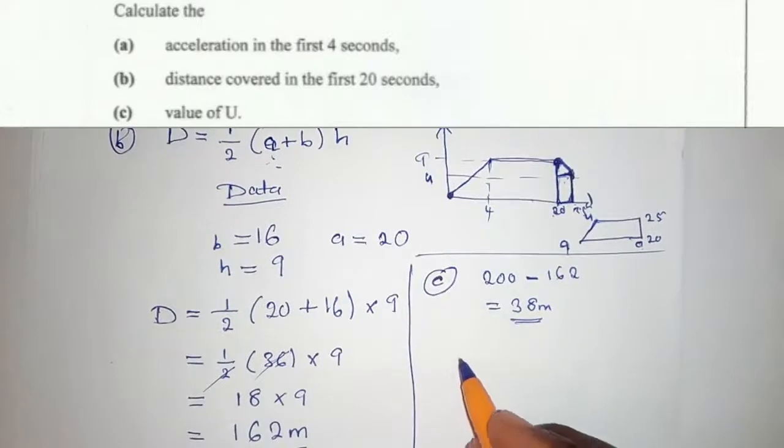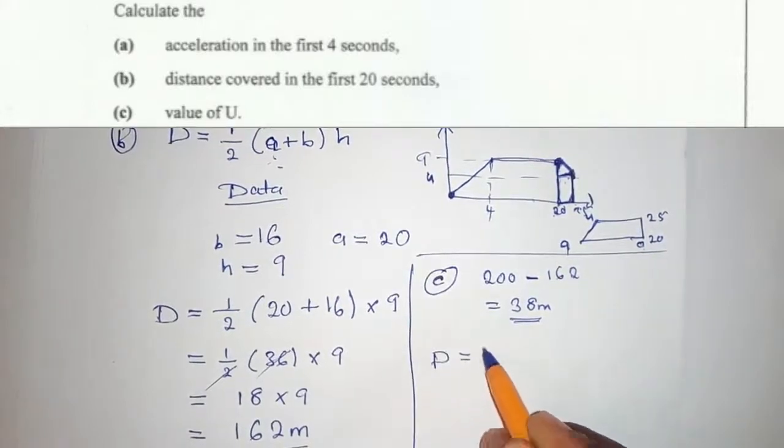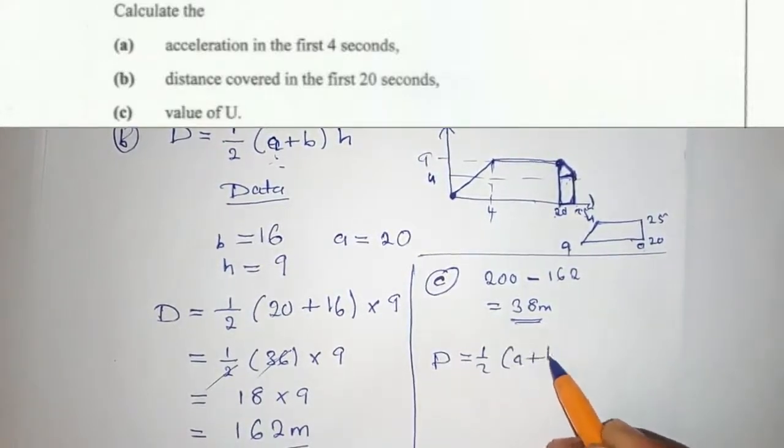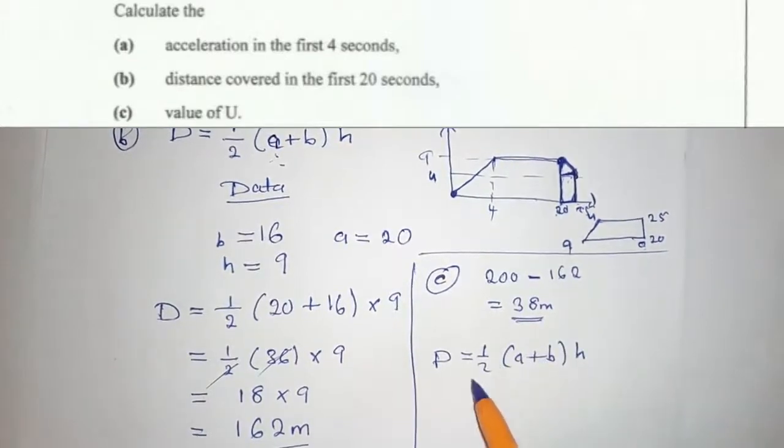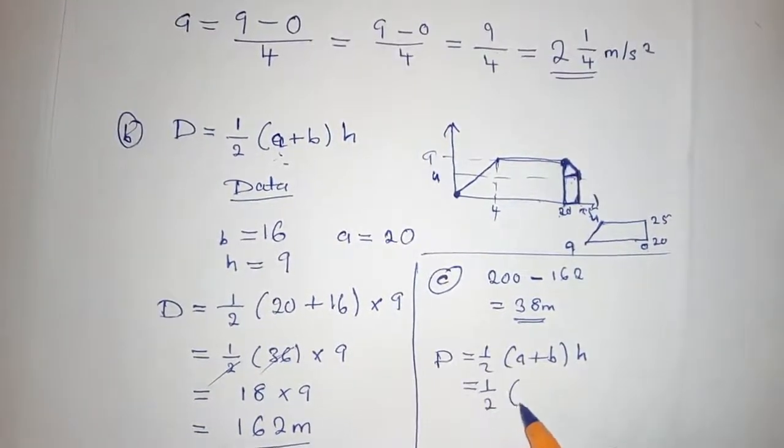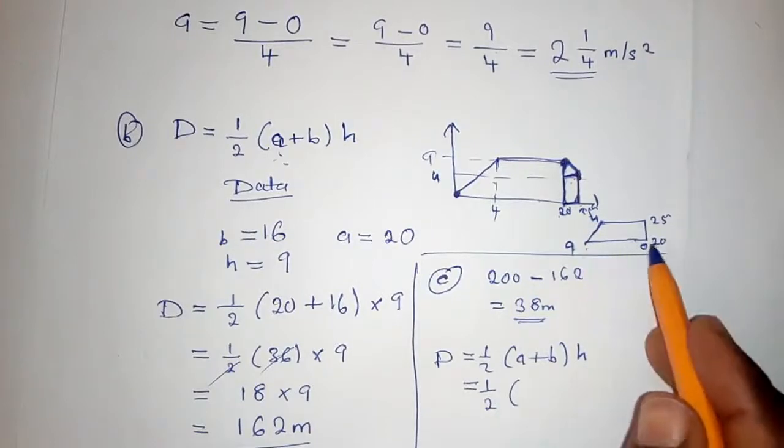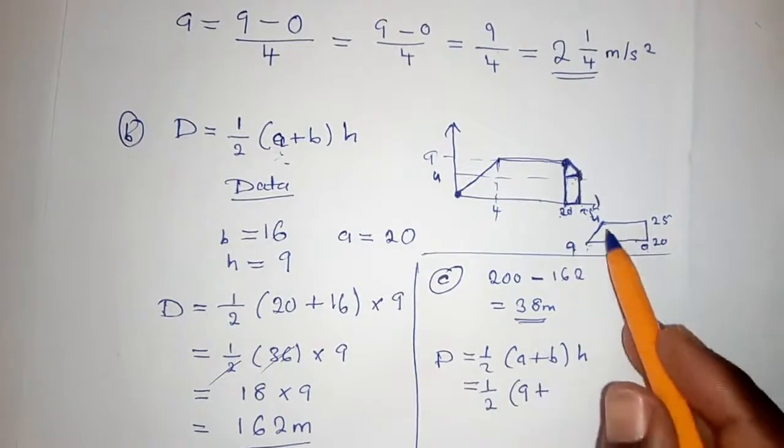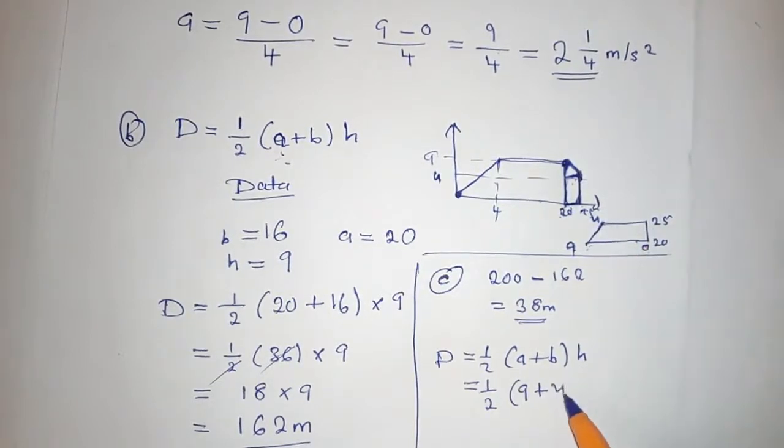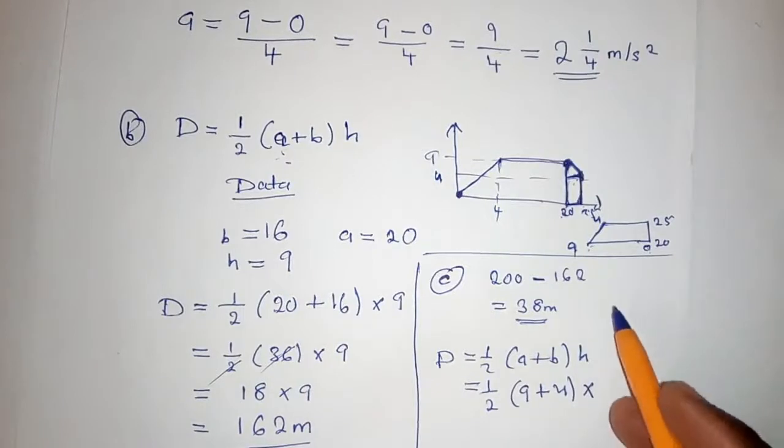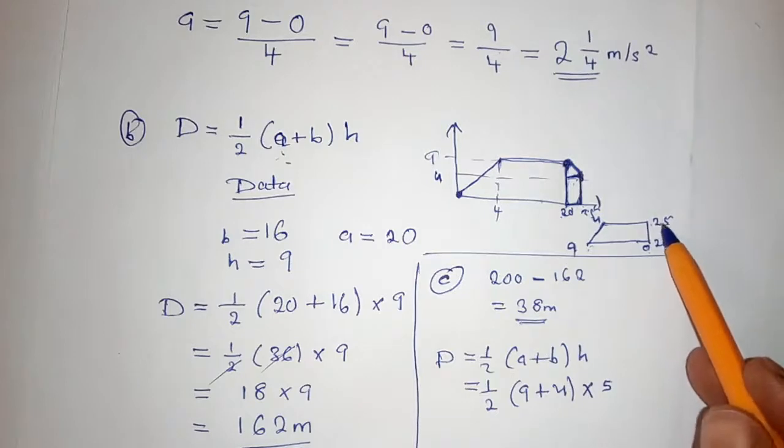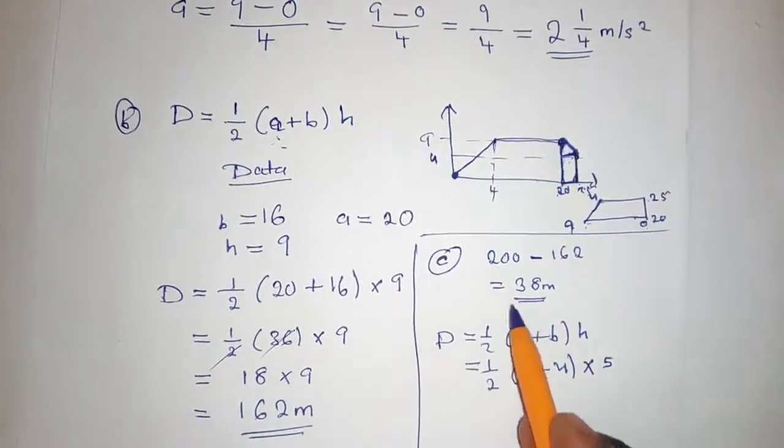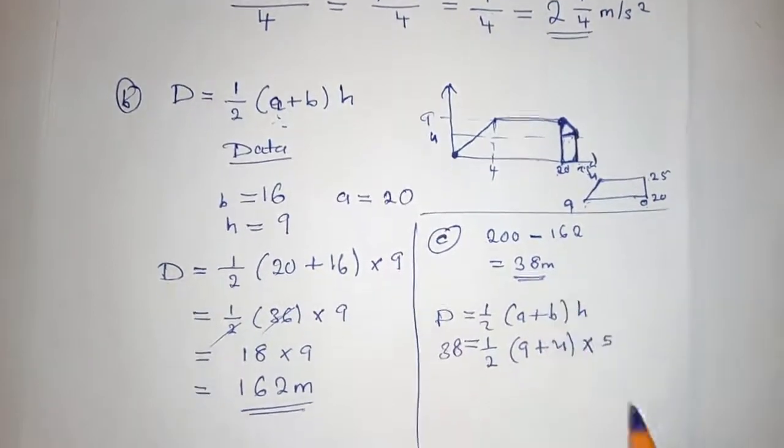So now we can use the formula for finding distance. Distance equals 1/2 times (A plus B) times H. So our A is 9 here, plus our B is U, multiplied by our height from here to here, which is 5. Because this is 20, so from 20 to 25 is 5. And the entire distance of this shape is 38. So we can now solve.